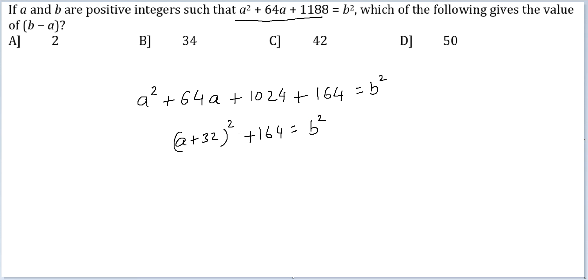The difference between two perfect squares is given by b² - (a + 32)² = 164.